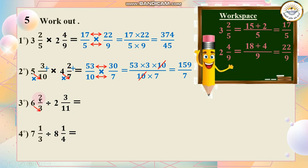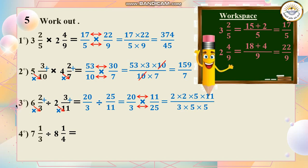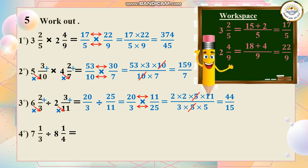Now I have 6 and 2 over 3 divided by 2 and 3 over 11. I multiply 6 by 3: 6 times 3 is 18, plus 2 is 20, so 20 over 3. Then 2 times 11 is 22, plus 3 is 25, so 25 over 11. I write 20 as 2 times 2 times 5, and 25 as 5 times 5, then simplify by 5. The answer is 44 over 15.